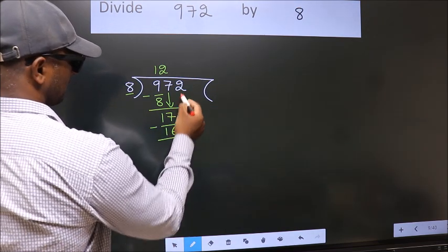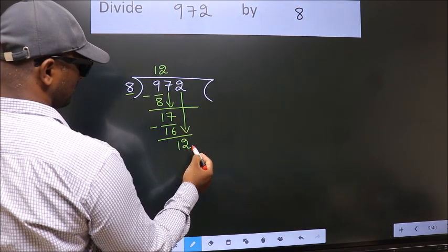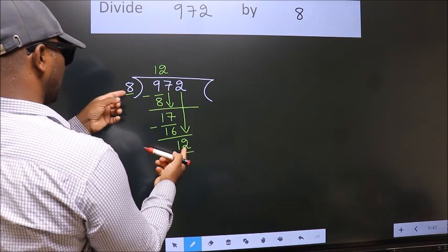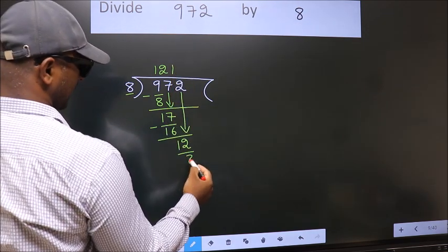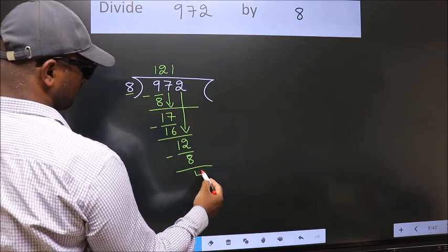After this, bring down the beside number. So, 2 down. So, 12. A number close to 12 in 8 table is 8 once 8. Now, we subtract. We get 4.